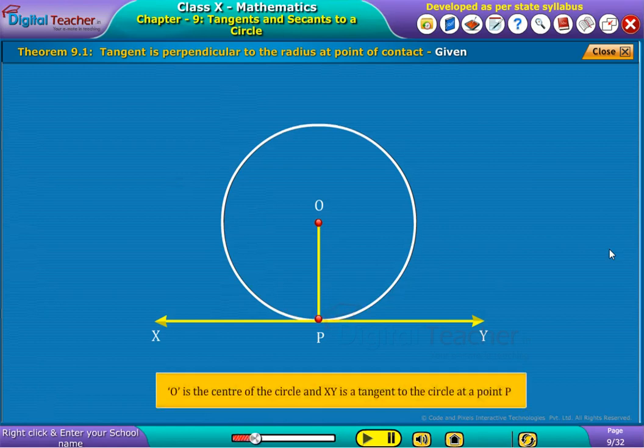Given information is: O is the center of the circle and XY is a tangent to the circle at a point P.